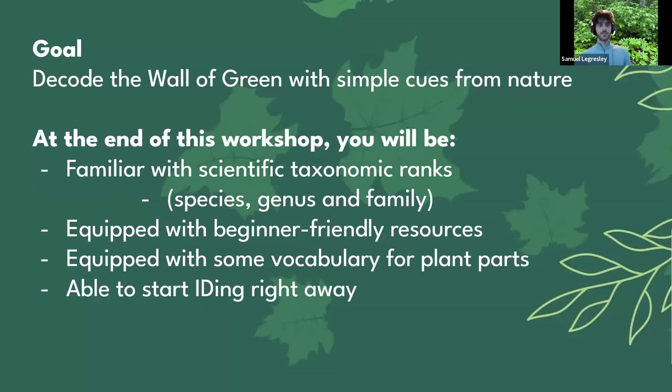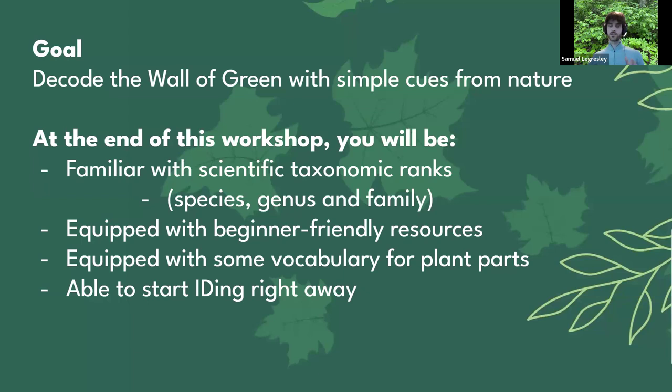The goal is to decode the wall of green with simple cues from nature. At the end of this workshop, you'll be familiar with scientific taxonomic ranks — species, genus, and family. You'll be equipped with beginner-friendly resources to better understand plants, and you'll have some vocabulary for plant parts that you can use in any ID book. You're going to be able to start IDing right away, because I'm going to show you some paths for easy plant identification.